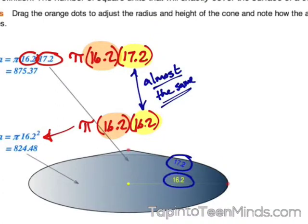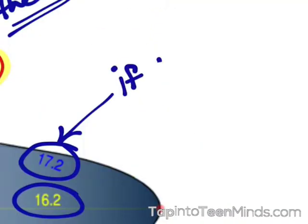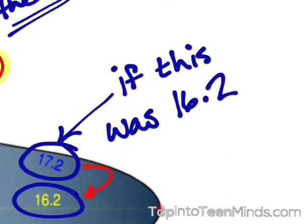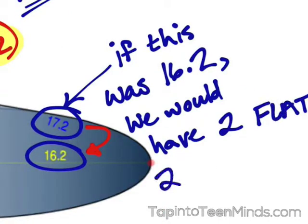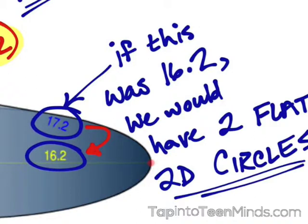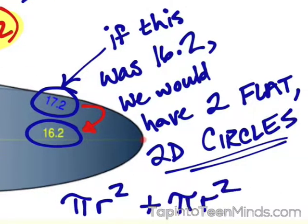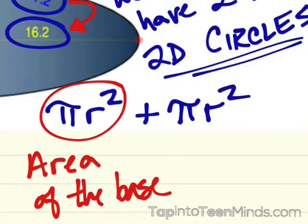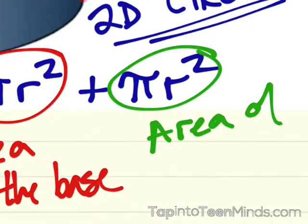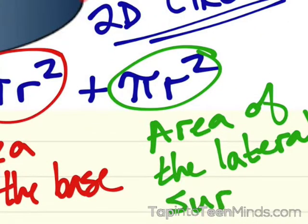Looking a little closer, you can see that if the slant height were the same as the radius, we would essentially have two flat circles and it would simply be the area of two circles. So π r² plus π r². The first π r² is the area of the base and the second for the area of the lateral surface.